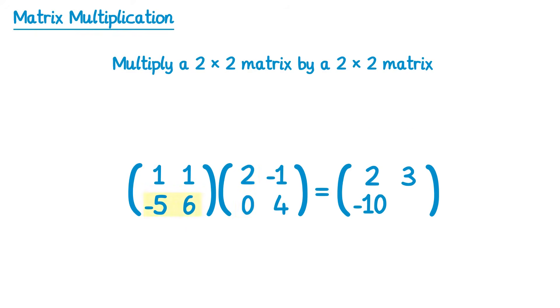And finally, we do the second row times the second column. So negative 5 times negative 1, which is a positive 5, and then we add to this 6 times 4, which means add 24, and 5 add 24 is 29. So this is your answer.